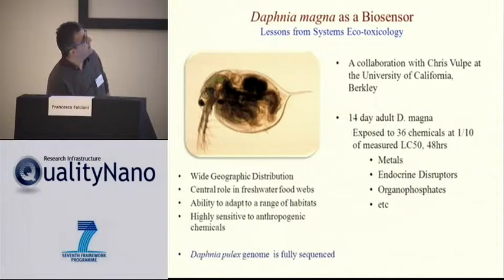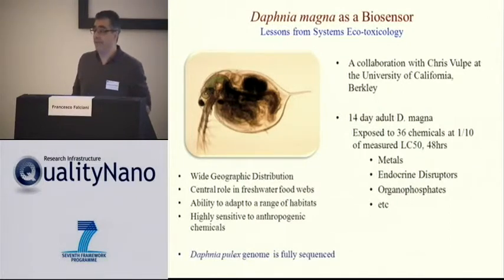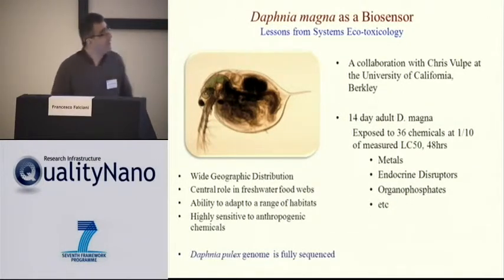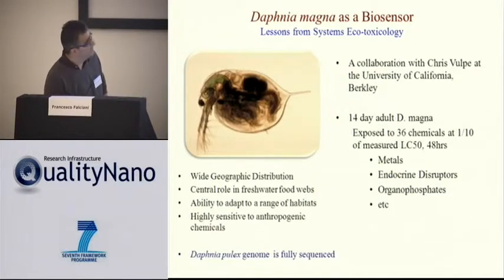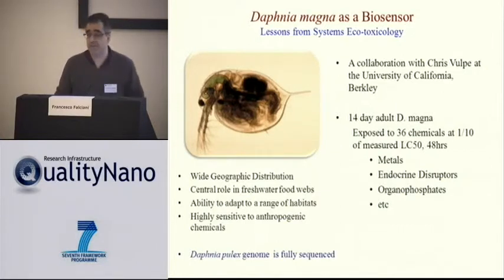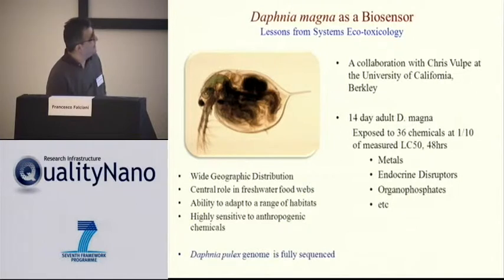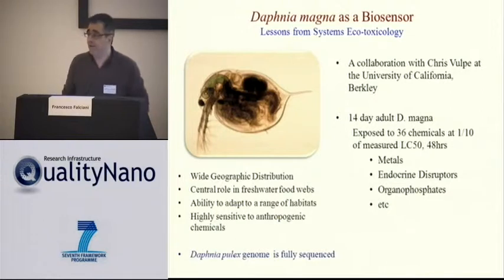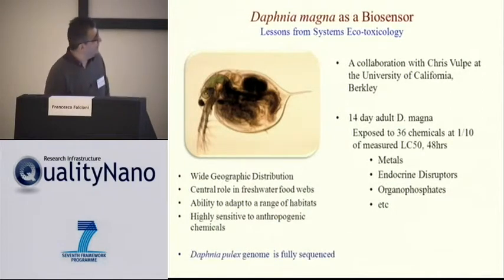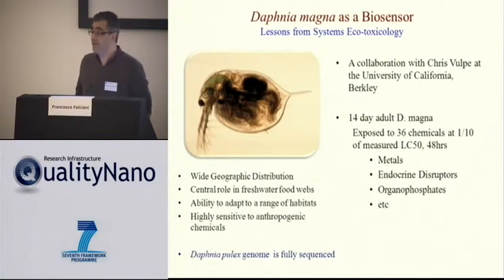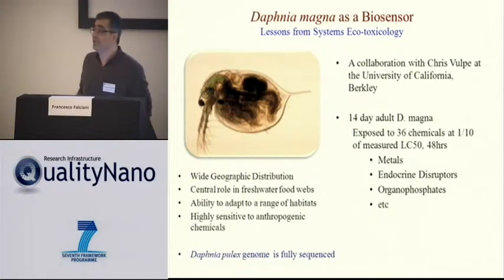We work in an organism called Daphnia magna, which is effectively a convenient biosensor. Daphnia is actually quite useful because it has a wide geographic distribution, it's important in freshwater food webs — so environmentally relevant — and it adapts very rapidly to a range of habitats. It's a fantastic little organism. Daphnia pulex genome is fully sequenced, and Daphnia magna, which is the species used in Europe for safety assessment, is almost fully sequenced.